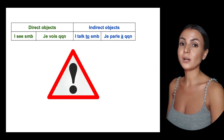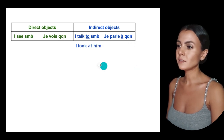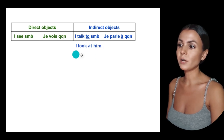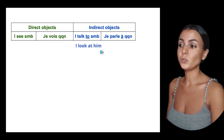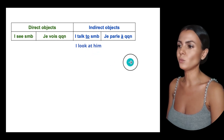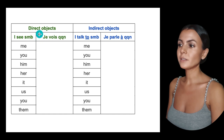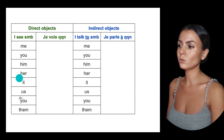Be careful, because it's not the same all the time. In English, for example, 'I look at him' is indirect — look at plus indirect object. While in French, it's a direct object: je regarde quelqu'un. So basically, direct and indirect object pronouns replace the names of people, cities, etc.